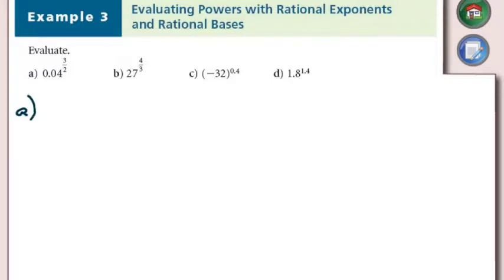So with A, we still need to look at what kind of root this is. There's a 2 on the bottom of that fraction, so it's a square root. But it's a square root of 0.04 cubed. Why cubed? Because there's a 3 on the top of the fraction.